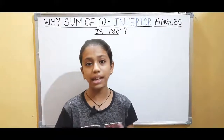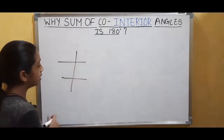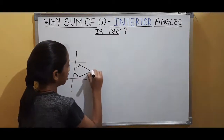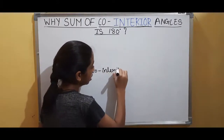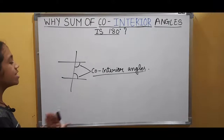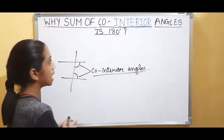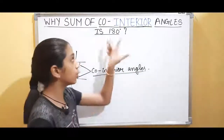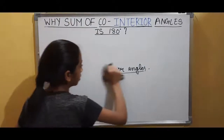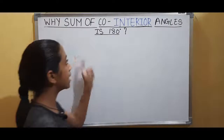Let's take a glance at what co-interior angles are. These are two parallel lines and this is a transversal. This angle and this angle are co-interior angles — the angles which are on the same side, inside the parallel lines, or in the interior of the parallel lines, are known as co-interior angles.